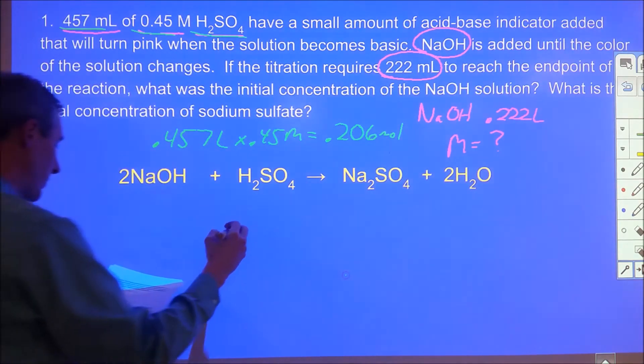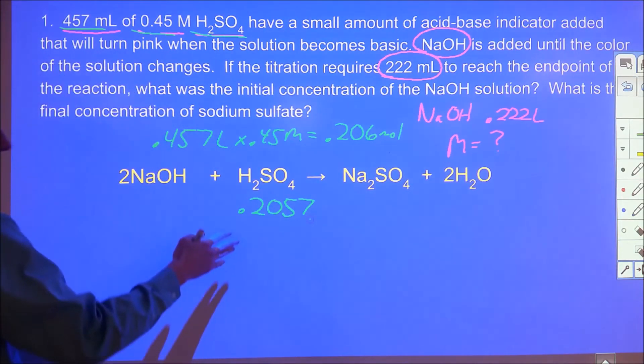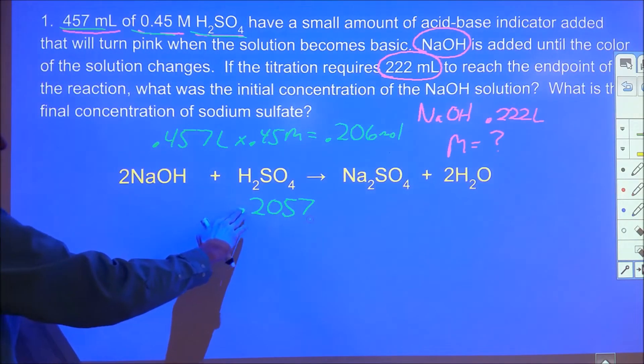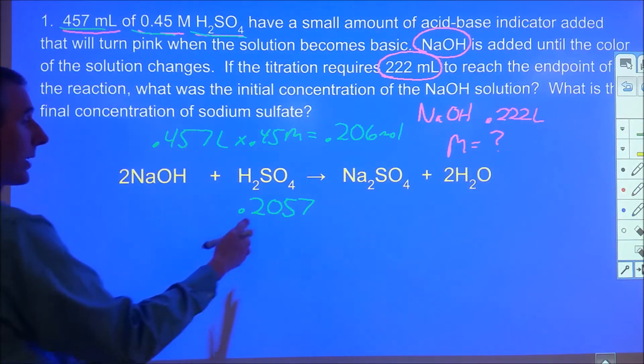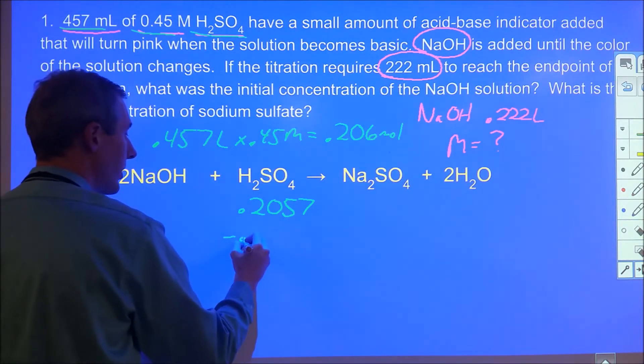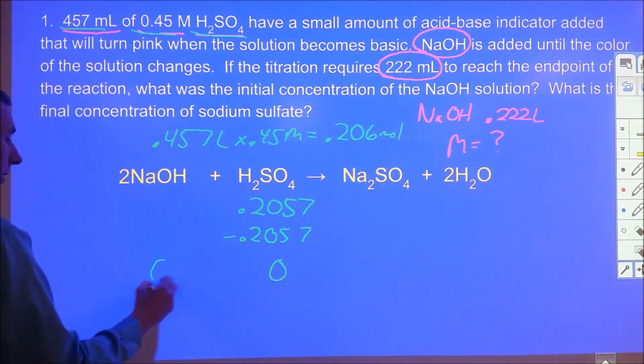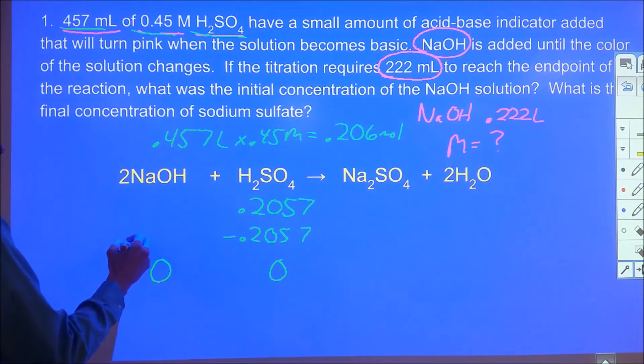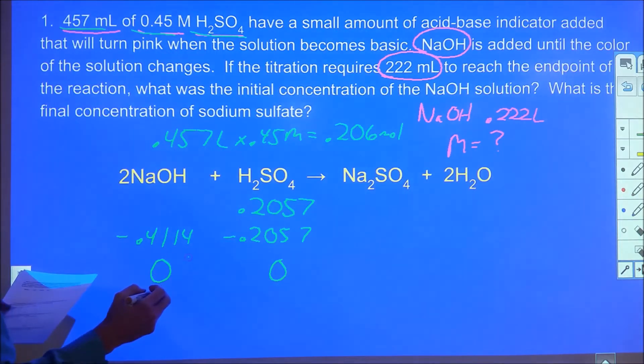We can plug that into our BCA table. For every one sulfuric acid, two sodium hydroxide had to react with it. So if all of this has reacted and the reaction is complete, we know that twice as much, 0.4114 moles of NaOH, reacted.